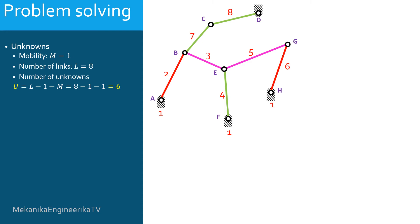The mechanism is an 8-bar mechanism: 1 bar is the ground, 1 bar is the input, and 6 other bars. The 6 unknowns correspond to the angles of these 6 bars. The number of required vector loop equations is half the number of unknowns, as each vector loop equation gives 2 scalar equations in planar kinematics. There are 6 unknowns, thus 3 loop closure equations are required to solve the position problem.